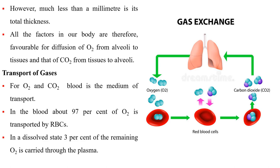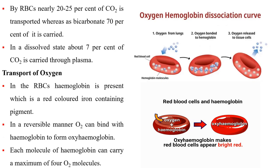Blood is the medium of transport for oxygen and carbon dioxide. About 97 percent of oxygen is transported by RBCs, while the remaining 3 percent is carried in a dissolved state through the plasma. Nearly 20 to 25 percent of carbon dioxide is transported by RBCs, about 70 percent is carried as bicarbonate, and about 7 percent is carried in a dissolved state through plasma. Hemoglobin, present in RBCs, is a red-colored iron-containing pigment; oxygen can bind with hemoglobin reversibly to form oxyhemoglobin, and each molecule of hemoglobin can carry a maximum of four oxygen molecules.